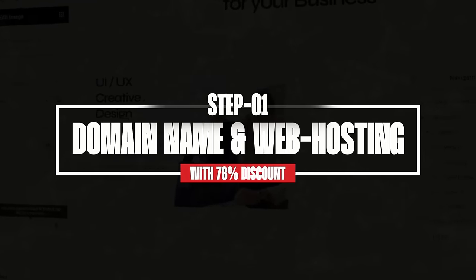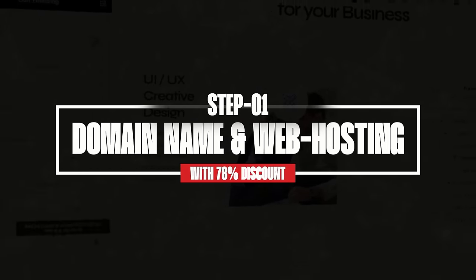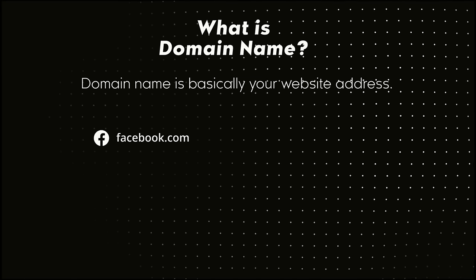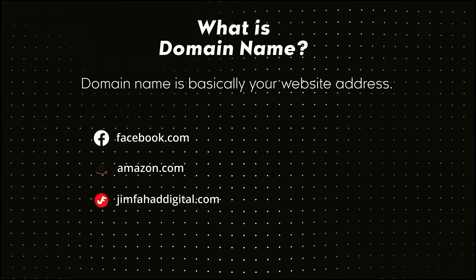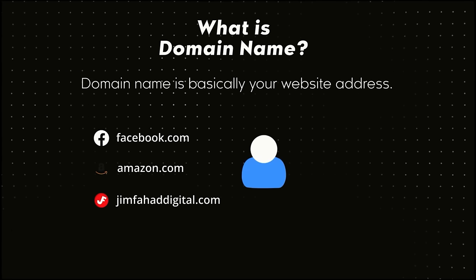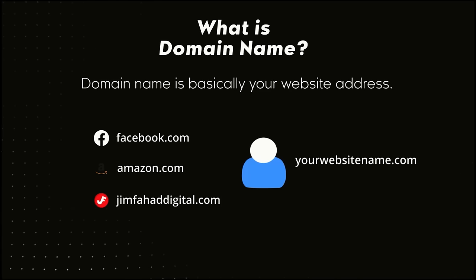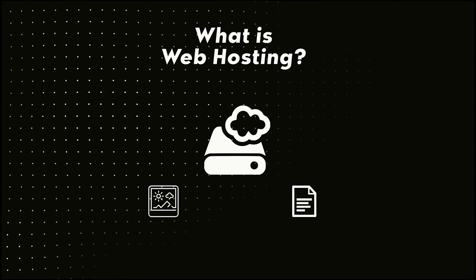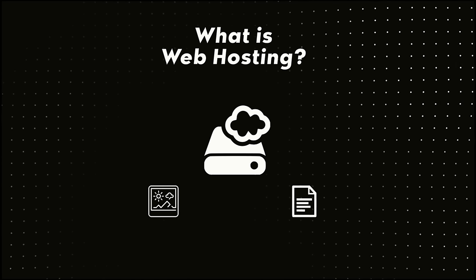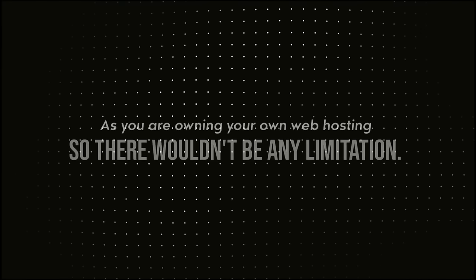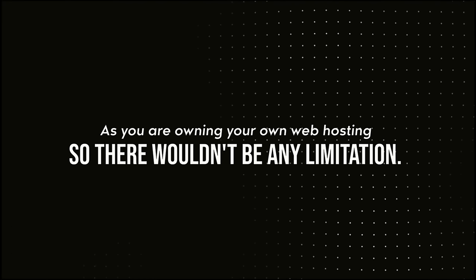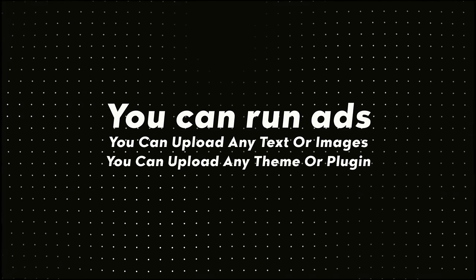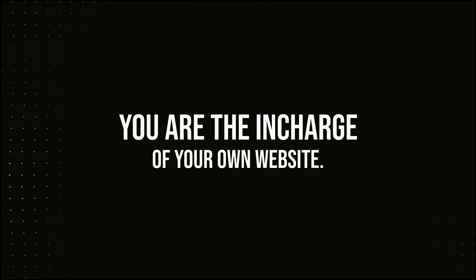Let's start with step one: getting your domain name and web hosting. A domain name is your website address — like facebook.com or amazon.com. For our website, you need an address like yourwebsitename.com. Web hosting is the storage space for your website — all your images and text will be stored there. Since you own your own web hosting, there are no limitations: you can run ads, upload any text, images, themes, or plugins you want. You are in charge of your own website.